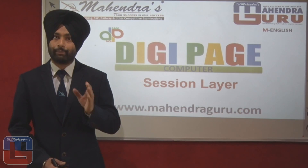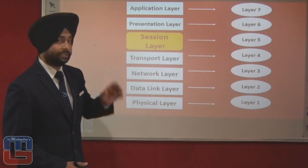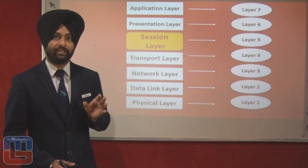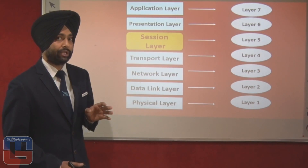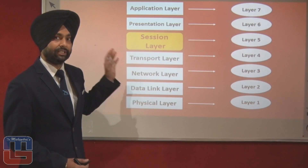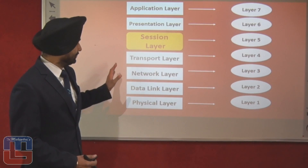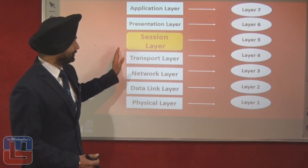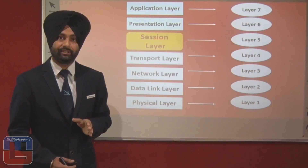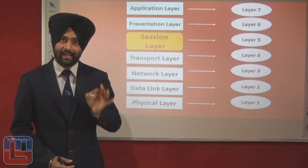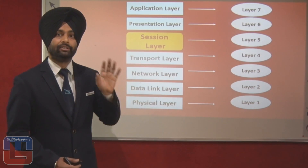Let us study what services are provided by the session layer, the fifth layer of the OSI model. First, let us see where the session layer is located. The layers are: the first is the physical layer, the second is the data link layer, the third is the network layer, the fourth is the transport layer, the fifth is the session layer, the sixth is the presentation layer, and the seventh is the application layer.